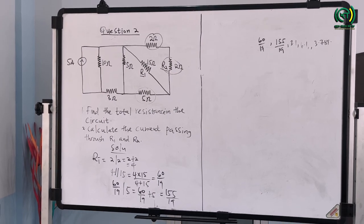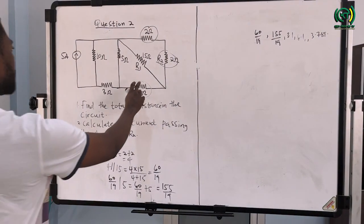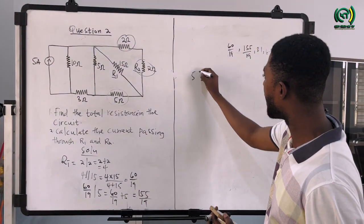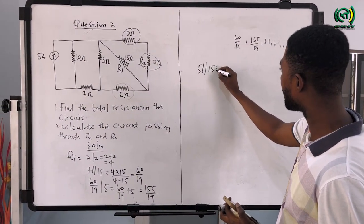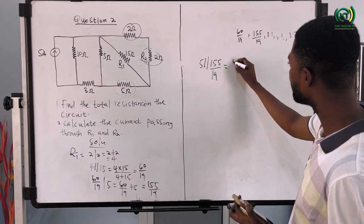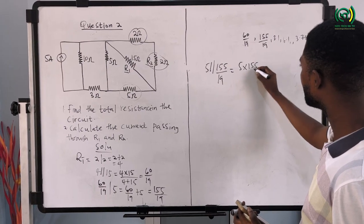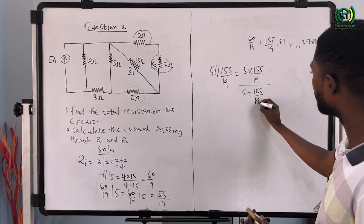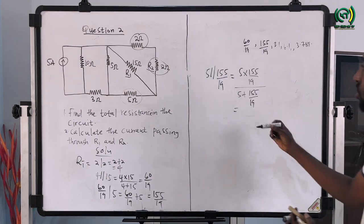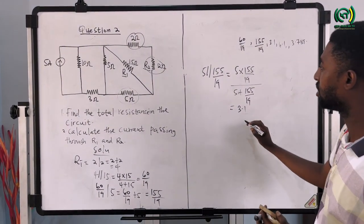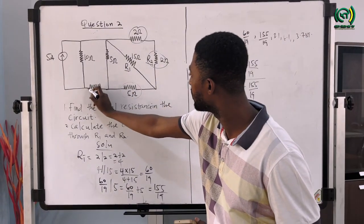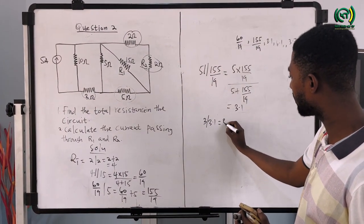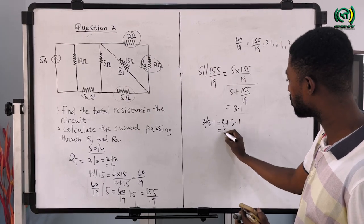Now 155/19 will be in parallel with the 5-ohm resistor. So we have 5 ohm in parallel with 155/19, which gives 5 times 155/19 all over 5 plus 155/19, and the answer is approximately 3.1. Now 3.1 is in series with the 3-ohm resistor, so we have 3 in series with 3.1, giving us 3 plus 3.1 which equals 6.1.